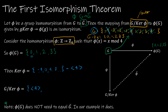One coset is just ⟨4⟩ itself, giving ..., -4, 0, 4, ... Then we have 1 + ⟨4⟩, giving ..., -3, 1, 5, ... Then 2 + ⟨4⟩, giving ..., -2, 2, 6, ... And then 3 + ⟨4⟩. Already you can see how these cosets are behaving similarly. This is the group G mod ker(φ) — those factor groups, those cosets.